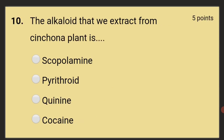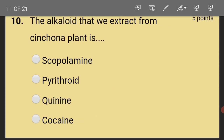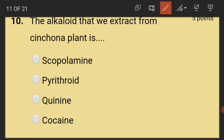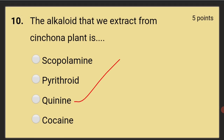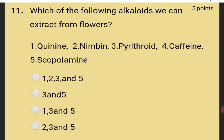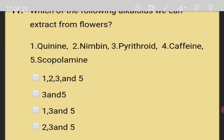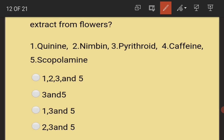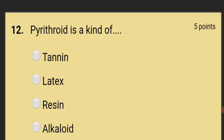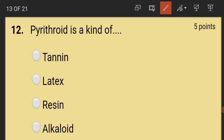The alkaloid extracted from the cinchona plant (Cinchona officinalis) is quinine, which is used to treat malaria. The alkaloids extracted from flowers include pyrethroid and scopolamine — that means options three and five are the answer. Pyrethroid is a kind of alkaloid.